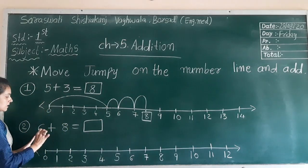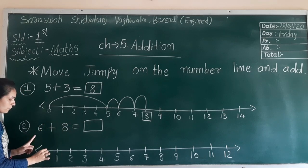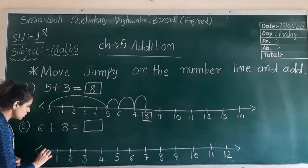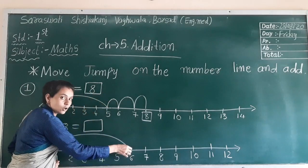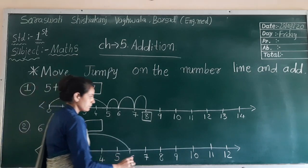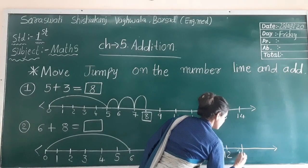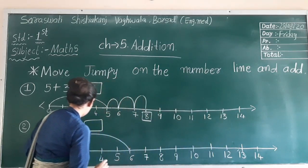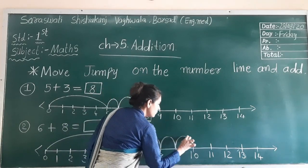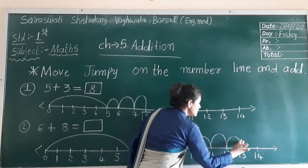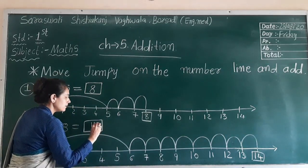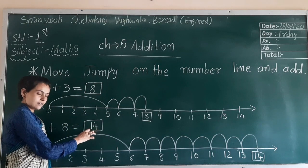Next, second number: 6 plus 8. So from 0 you have to start, you have to move to 6. 6 is here, so take jump, go with 6. And here 8, so you have to take 8 steps. 8 steps take from 6: 1, 2, 3, 4, 5, 6, 7, 8. This is your answer. So you have to find your answer here, 14 is your answer.